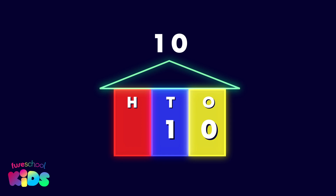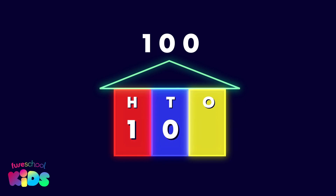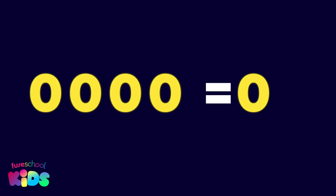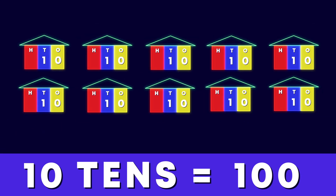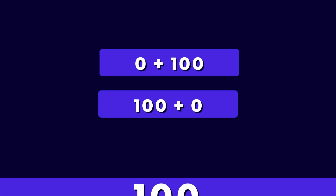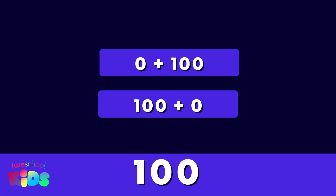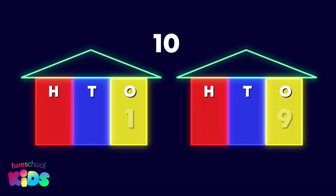We can fill the empty places on the side with zero. Zero is a placeholder for when a place is empty — it sits there unless another digit wants to move in. More than one zero is just zero. Ten tens make 100. So 100 equals zero plus 100, and 100 plus zero.